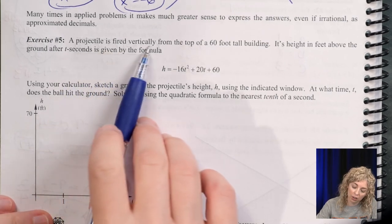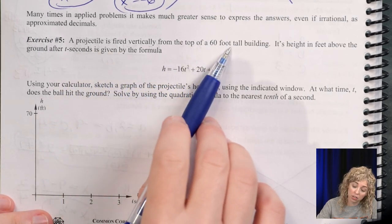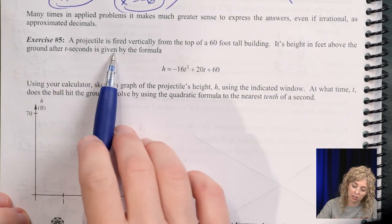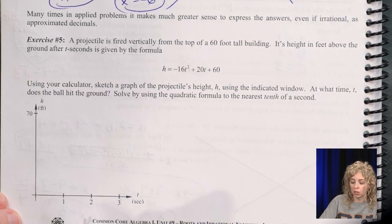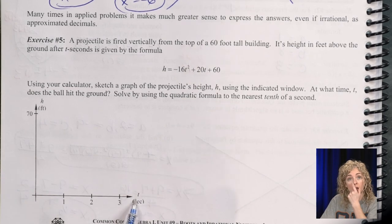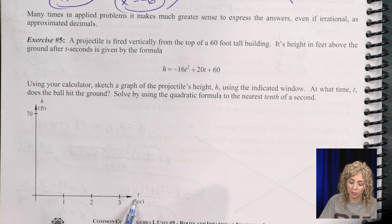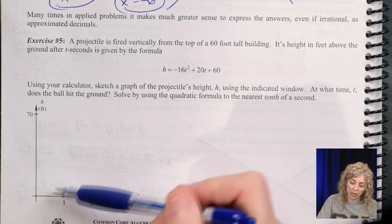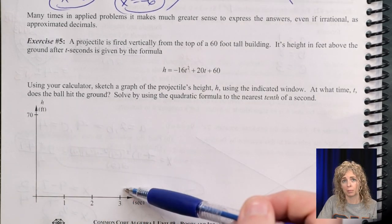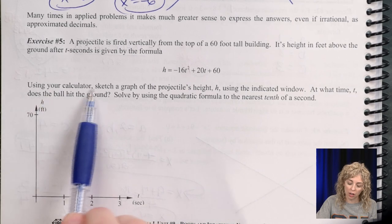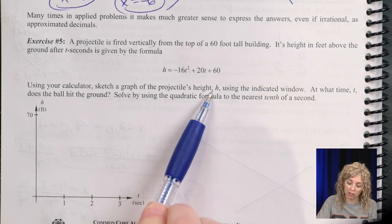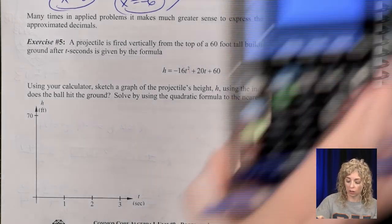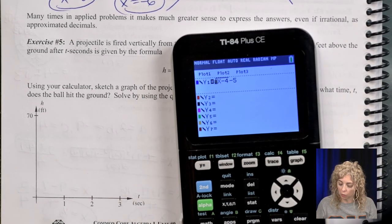Okay? So it says, a projectile is fired vertically from the top of a 60 foot tall building. Its height in feet above the ground after t seconds is given by the formula. So t seconds, so the number of seconds is along the x-axis of this projectile. And we're going to know its height over time.